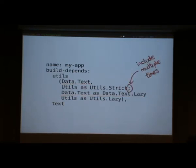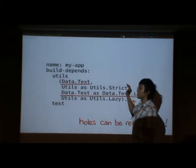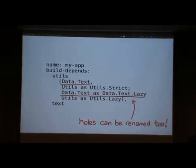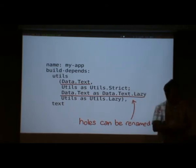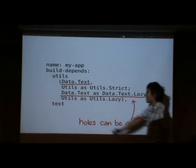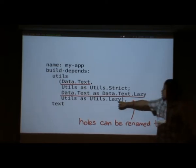This syntax says I want to instantiate utils twice. Looking at one side of the semicolon: utils, please give me the module Data.Text, and give me the module utils renamed as utils.string. On the second instance: utils, please give me Data.Text as Data.Text.Lazy. You might be scratching your head — that's not a module, that's a hole, that's a signature. But signatures can be renamed too, and all we care about is making sure the name of the hole ends up matching the name of the implementation. Since text gives us Data.Text.Lazy, I rename the hole instead of renaming the implementation, and now utils will use the correct implementation.